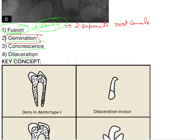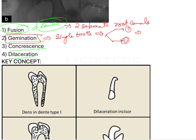Germination occurs when a single tooth bud splits into two. You will see two crowns, but there will be only one root canal. That single root canal helps you identify germination.